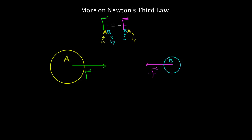These forces are the same magnitude even if the two objects are not the same size. If object A is a big star and this is a smaller planet orbiting that star — which could be millions of times less massive than the star — it would still exert the same force. If the star is pulling on the planet with force negative F, then the planet has to be pulling on the star with force F, and they have to have the same magnitude even if they are different sizes.